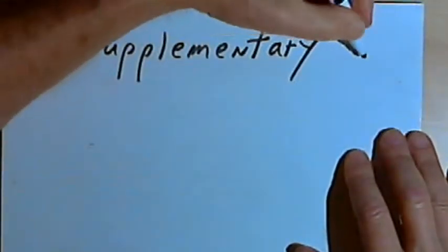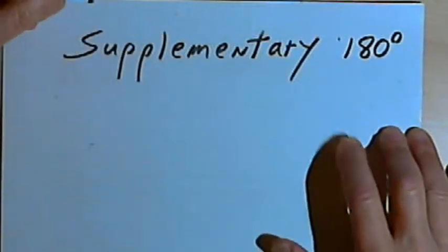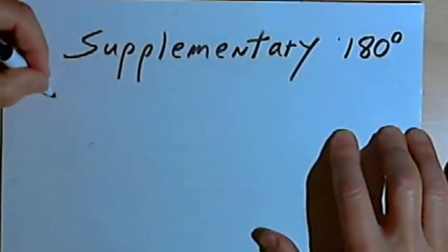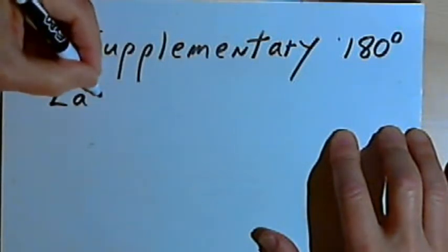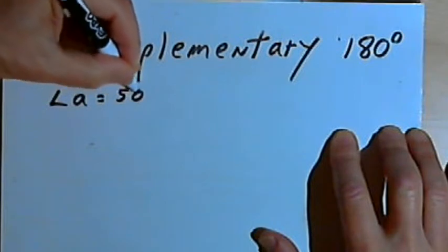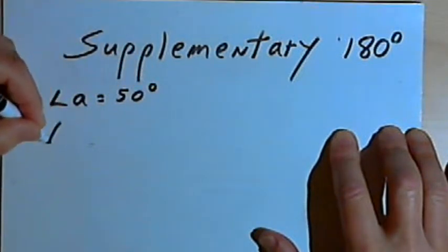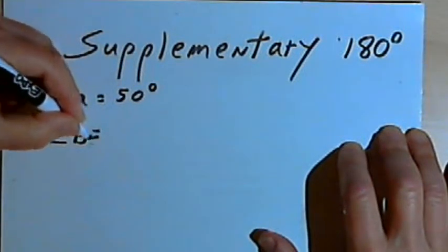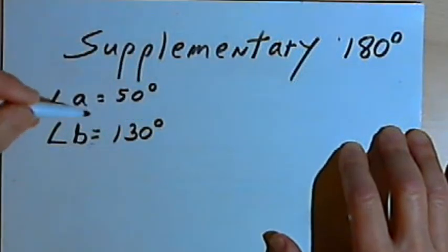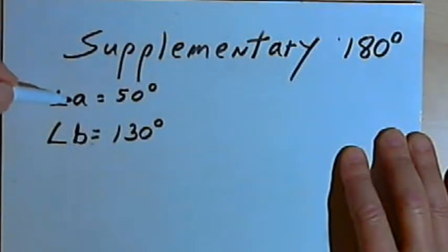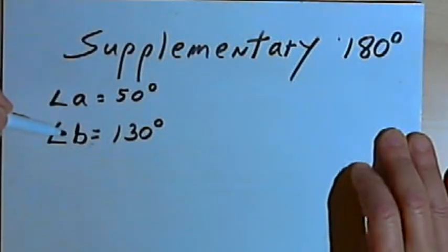Supplementary angles are going to add up to 180 degrees. If we have angle A and angle A is 50 degrees, and angle B is 130 degrees, then since 50 plus 130 equals 180, we could say that angles A and B are supplementary.